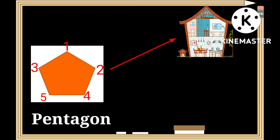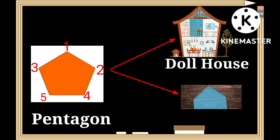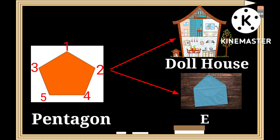A cube has 12 edges. Ice and dice have a similar shape to that of a cube. This is a shape of a pentagon — p-e-n-t-a-g-o-n. It has five edges. A dollhouse and an envelope have a similar shape to that of a pentagon.